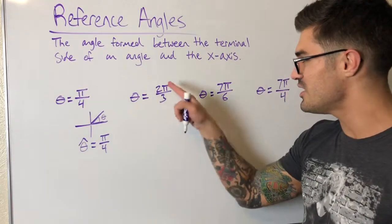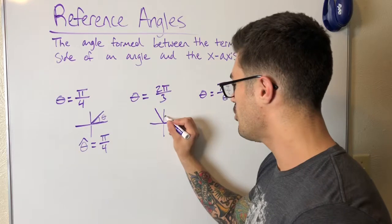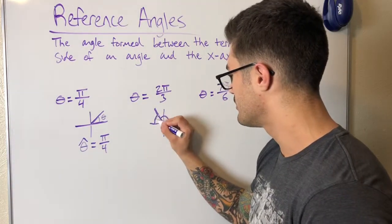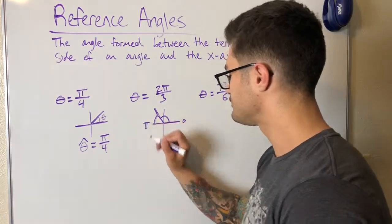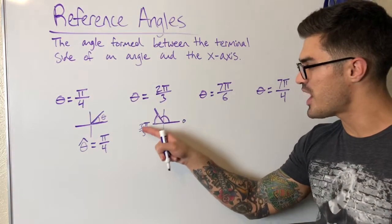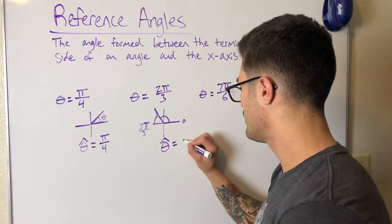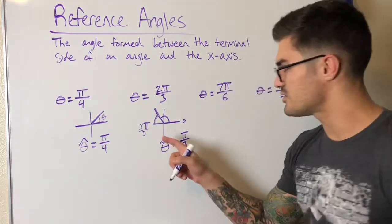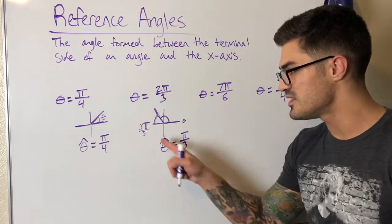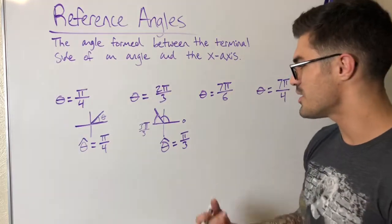For theta equals two pi over three, I sketch the angle — it's in the second quadrant, with the terminal side up here. The reference angle is the part between the terminal side and the x-axis. I rewrite pi as three pi over three, and it's clear that two pi over three stops pi over three short of pi. So theta-hat equals pi over three. You can also use the formula pi minus theta for second-quadrant angles, though I prefer just drawing it.